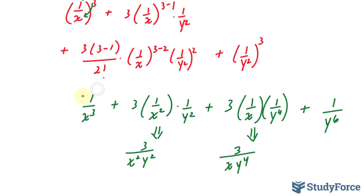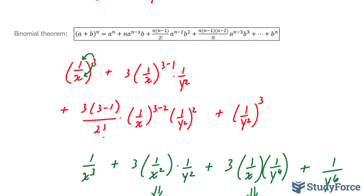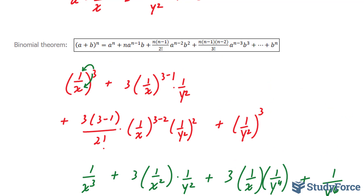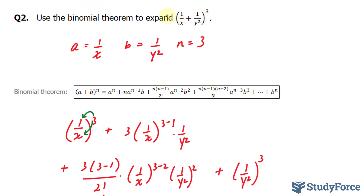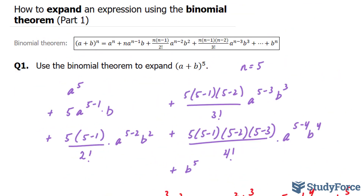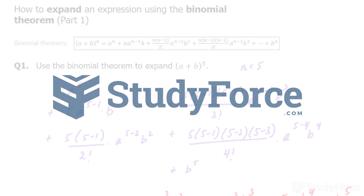This expression right here represents the original expression fully expanded. And so there you have it — two examples on how to expand an expression using the binomial theorem. Make sure to watch part two for a more complicated example.